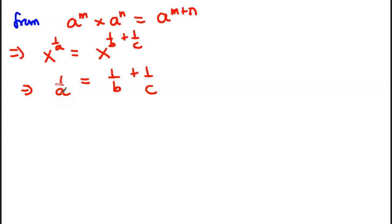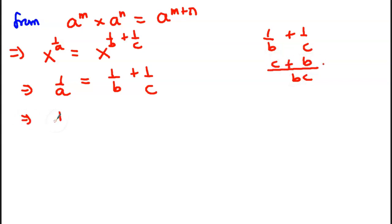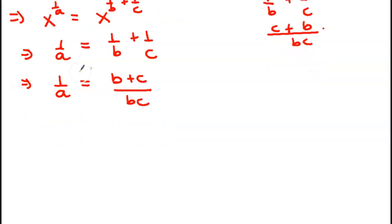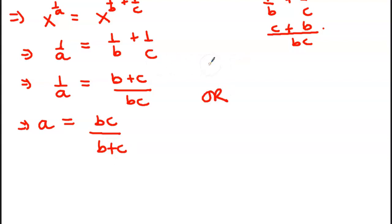Now we have to express A in terms of B and C. On the right-hand side, 1 over B plus 1 over C — the LCM is BC — so we get C plus B over BC. Therefore 1 over A is equal to B plus C over BC. To find A, we can flip this since it is an inverse, so A equals BC over B plus C.